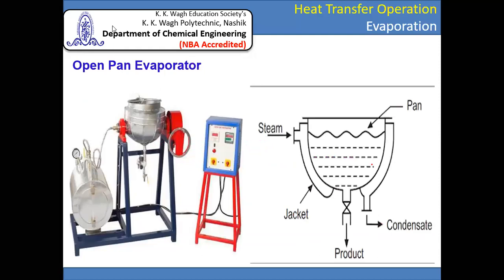Let us discuss the open pan evaporator. The name itself suggests the pan is open. It is a metallic pan where you put the feed, which is nothing but thin liquor — a liquid having low concentration. You put a small quantity of thin liquor in this pan, which is supported by a jacket arrangement. This jacketed pan assembly is present in the open pan evaporator, and through this jacket, steam flows.